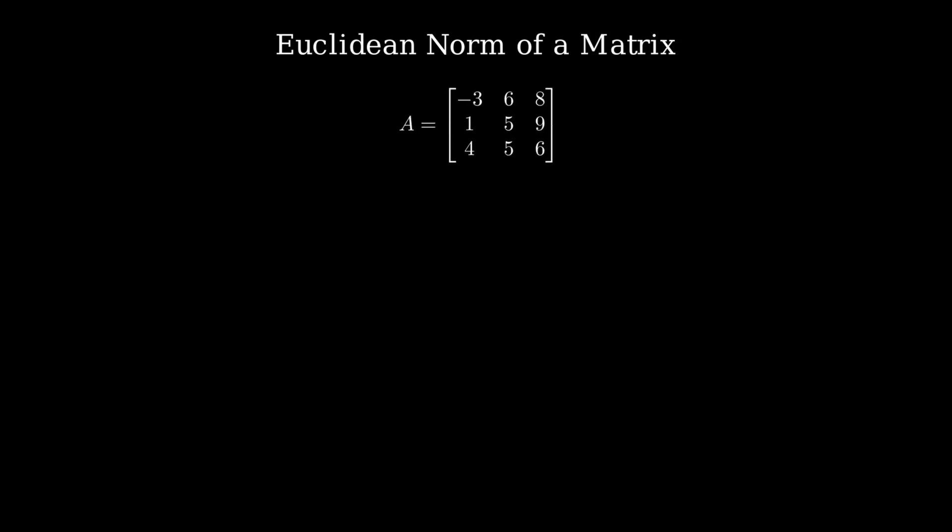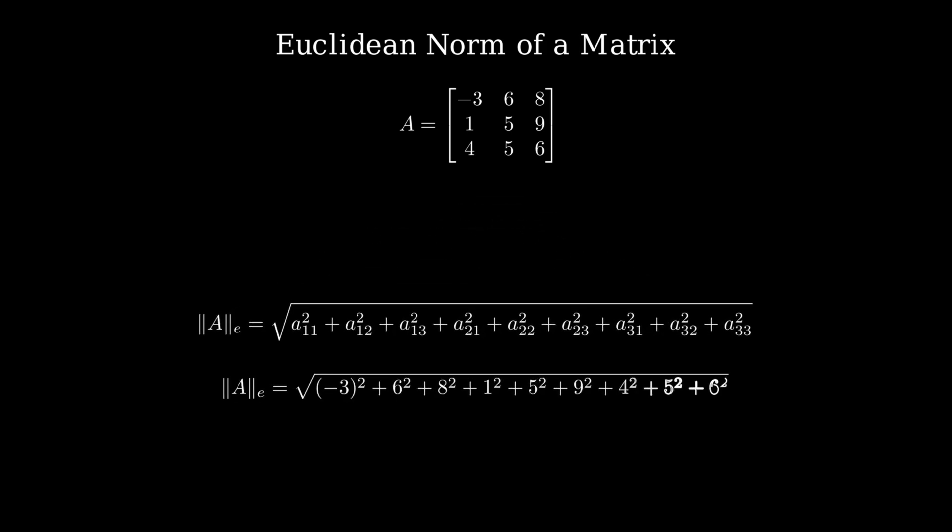To calculate the Euclidean norm of a matrix, square each element of the matrix. Sum up all the squared values. Take the square root of the sum.